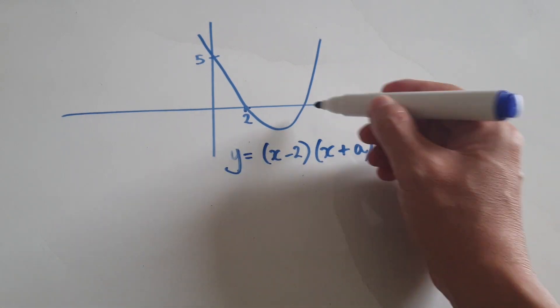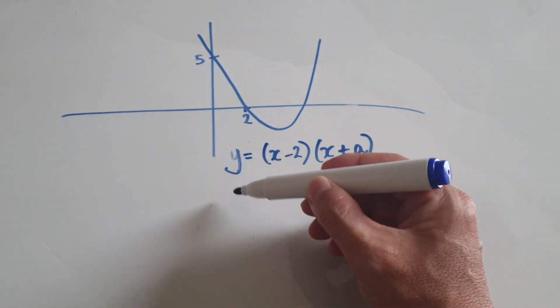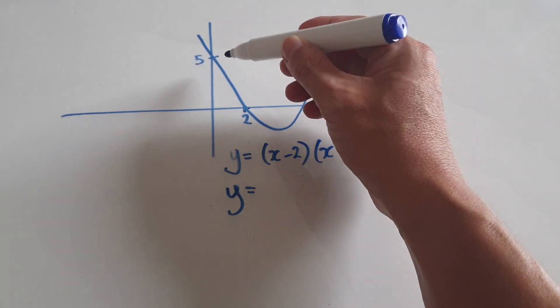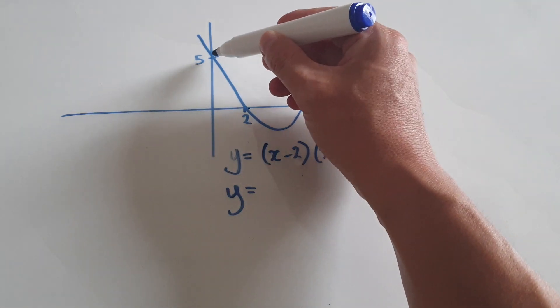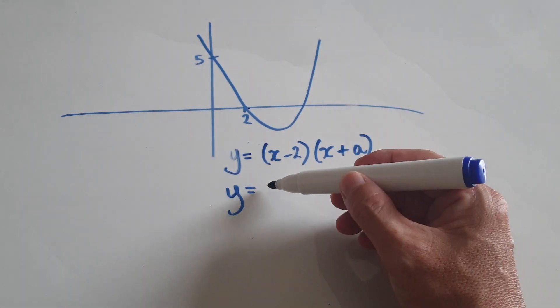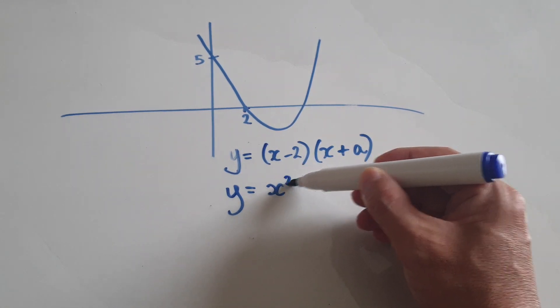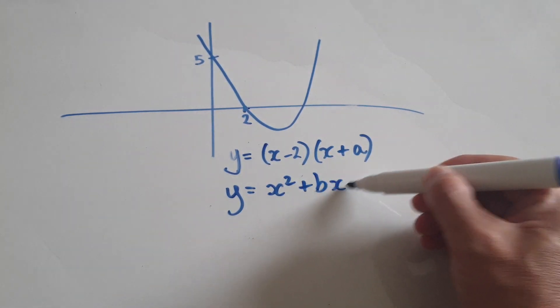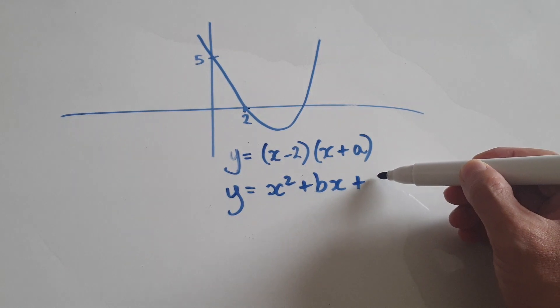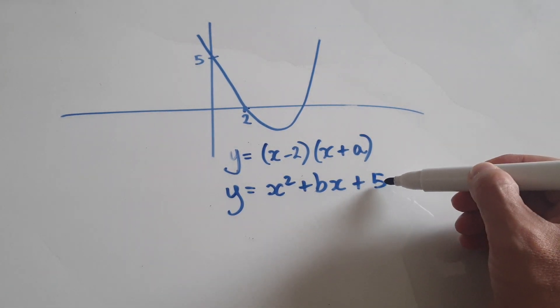We don't know what this root is. We're trying to find a. And also, if you know a quadratic that has an intercept of 5, then you know it's of the form x squared plus bx plus 5 because you know the intercept is 5.